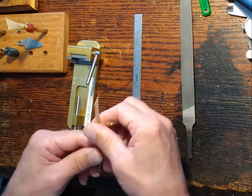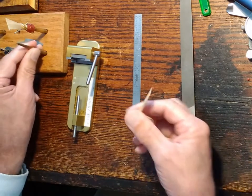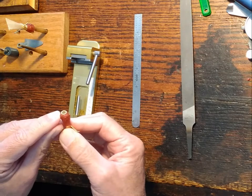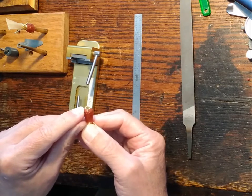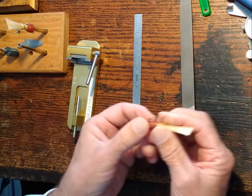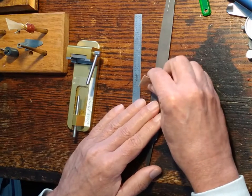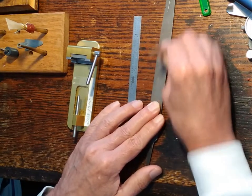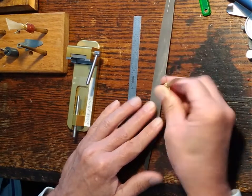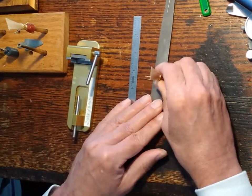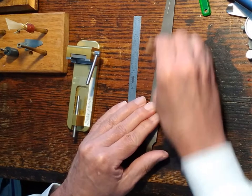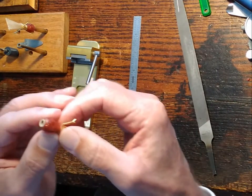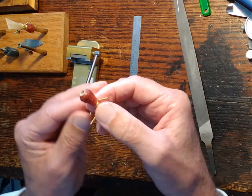So what I want to do with this particular reed is make sure that the end on this is perfectly flat. This one is not quite that way, so I'm just going to take it on a file and hold the reed and make a couple swipes on it so it's now flat and straight.